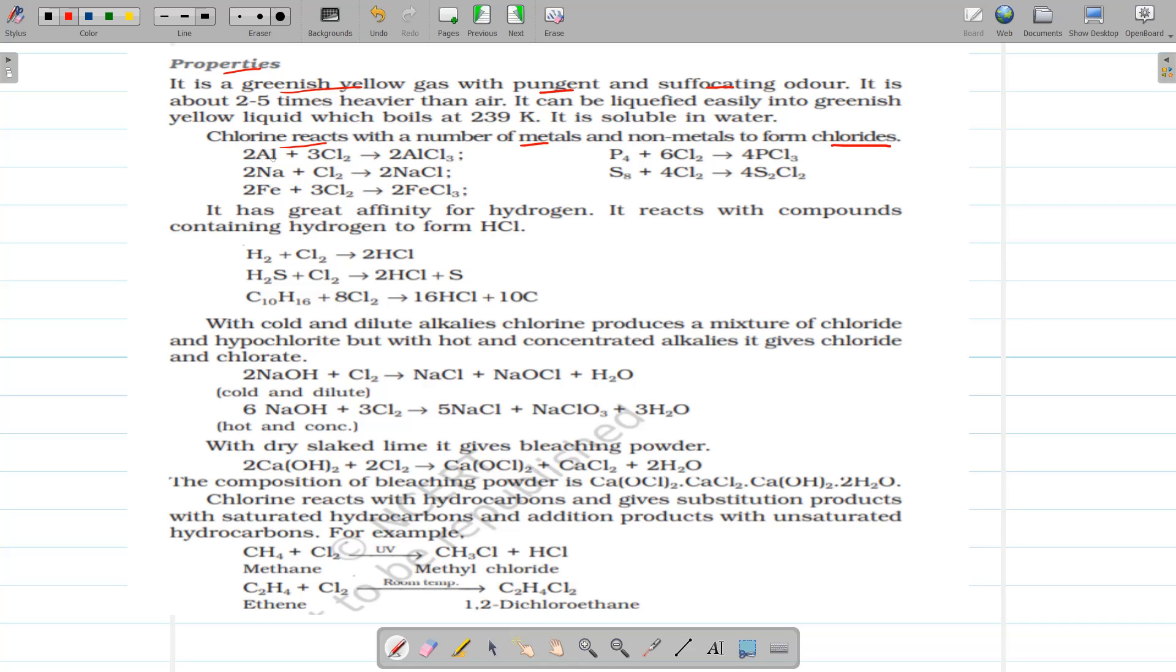For example, it reacts with aluminum to form AlCl3, sodium to form sodium chloride, iron to form FeCl3, and it can combine with non-metals such as phosphorus and sulfur to form PCl3 and S2Cl2.